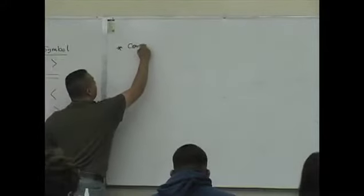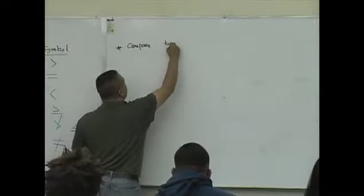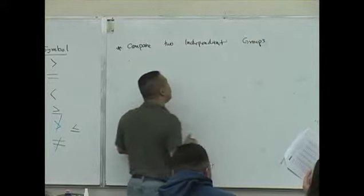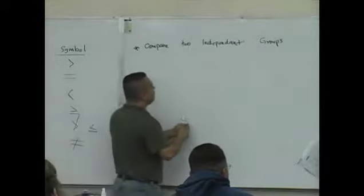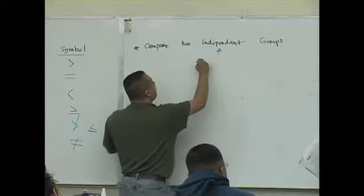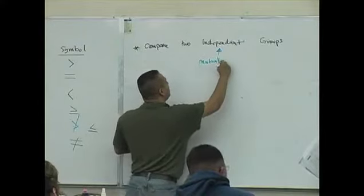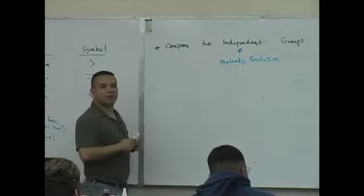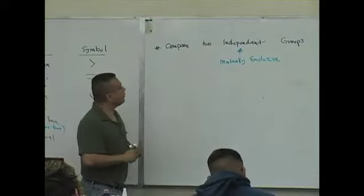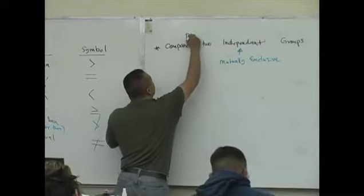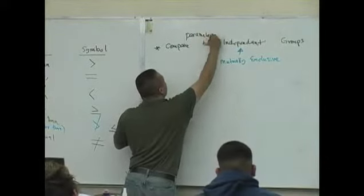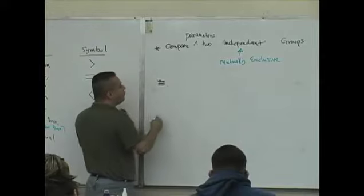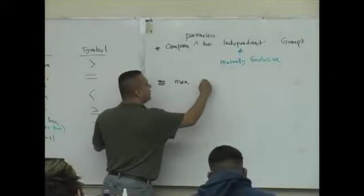We're also going to look at two other settings of hypothesis testing. Very often, people like to compare what the book calls independent groups. And it's sort of bad language. It should be not two independent groups. It should be two mutually exclusive groups. Mutually exclusive means that you don't have the same person on both lists. So we're going to compare really parameters from two mutually exclusive groups. So we can compare parameters from, for example, parameters from two groups like men versus women.